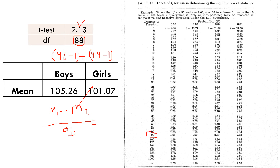The degree of freedom is 88, and the nearest value in the t-table is 90. At the 0.05 level of significance, the tabled value is 1.99. Our obtained value of 2.13 exceeds 1.99, so it is significant at 0.05. However, the tabled value at the 0.01 level is 2.63, and our obtained value of 2.13 is less than that, so it is not significant at 0.01.